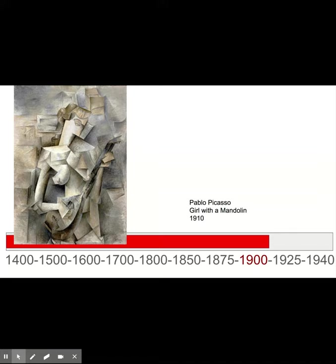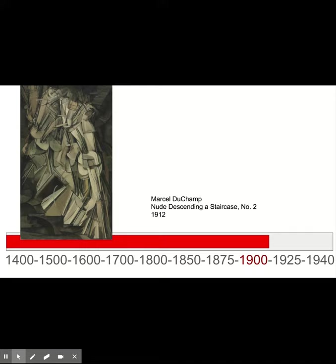Pablo Picasso begins venturing into geometric abstraction, looking at figures and forms with overlapping views and poses, and simplifying them into simple geometric planes. But he's still focused on representation — he's showing you, in this case, a girl with a mandolin, so there's still a cornerstone of representing something we recognize as real. Marcel Duchamp is also playing around with this idea, painting an overlapping figure descending a staircase many times over, capturing the movement into an abstract composition, but still based on representing something real.